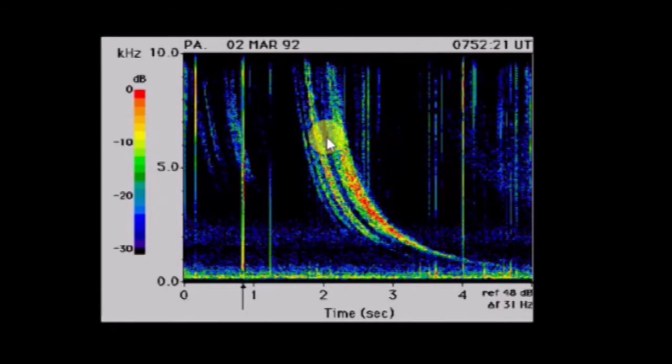This is an example of a typical whistler and a spheric that was measured from Stanford VLF system.